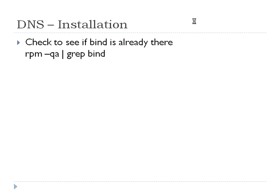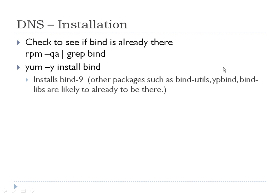Number one, just for common sense, and two, just to keep it up to date. If you're going to install it, the first thing you should do is check to see if it's already there. Run 'rpm -qa | grep bind' to see what's there. You'll see bind-utilities, YP bind (which is something completely different) — basically the client end of BIND. What we need is the server end, and to get that you say 'yum install bind'.